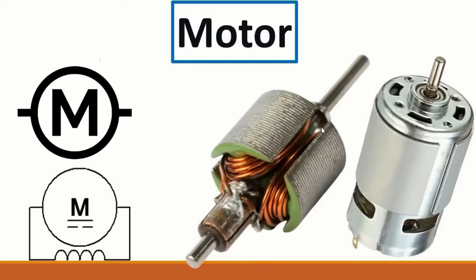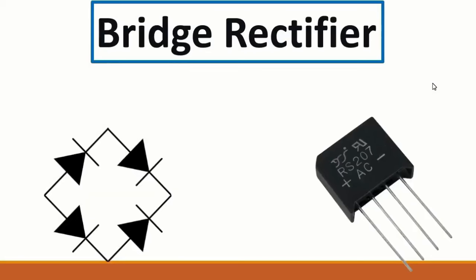Then we have the motor. Its symbol can be one of two forms. The motor contains two major parts: a stator and a rotor. The stationary part is the stator and the rotating part is the rotor.